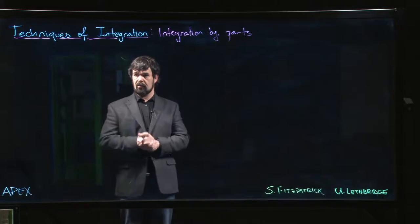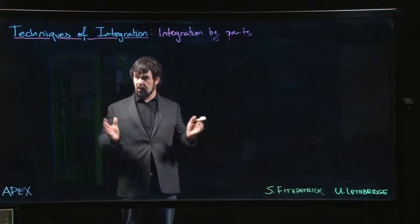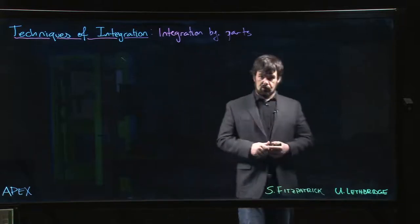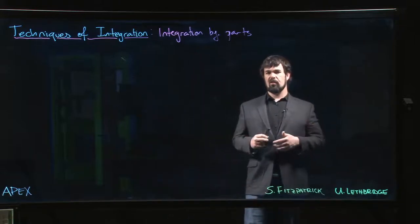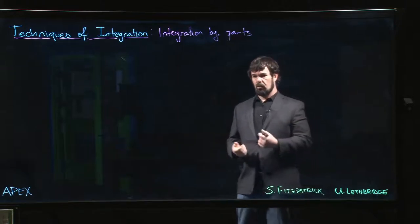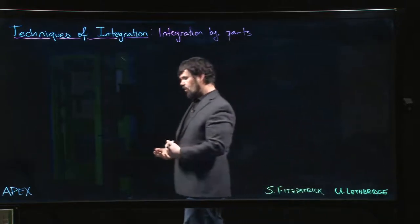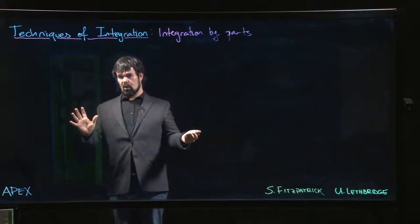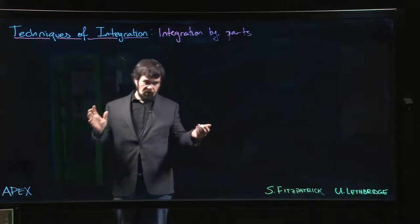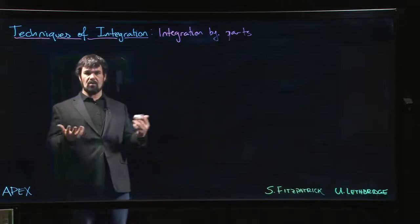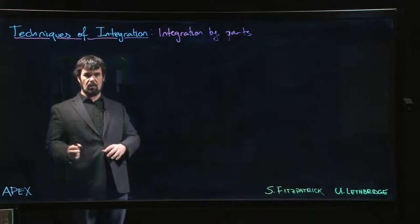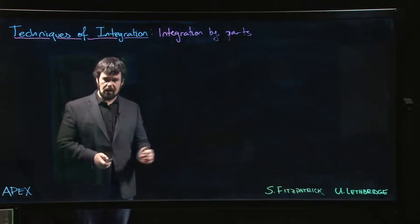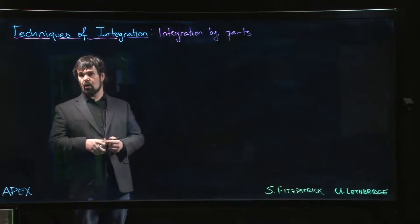We're going to move on now to our next technique of integration, which is known as integration by parts. The first method we looked at is substitution, and we understand substitution as trying to reverse engineer the chain rule — reversing the steps in the chain rule. Substitution applies inherently to situations where you have function composition, but going backwards you have to be a little lucky, because the chain rule gives you that extra bit — the derivative of the inside — and if that's not there, substitution doesn't always work out.